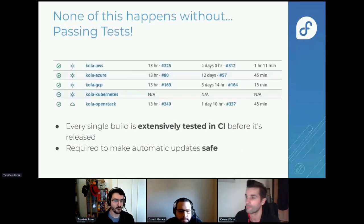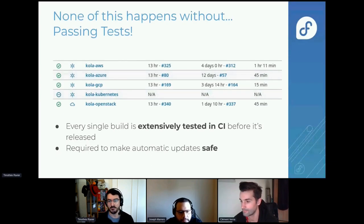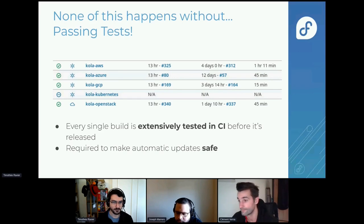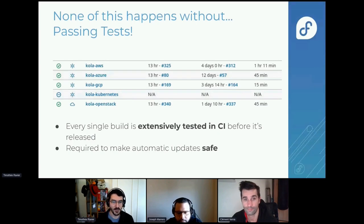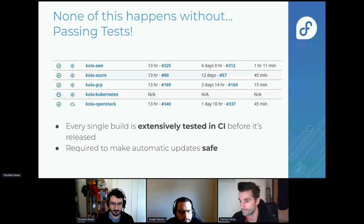All of that only happens because we have a huge number of tests. Before any single release of Fedora CoreOS goes out, we run a huge battery of tests across all major clouds and QEMU, making sure everything runs smoothly before we push any release out for everybody to consume via auto-update. We test extensively — it's kind of like doing a test for a new Fedora release, but every time we do a Fedora CoreOS release, because we want automatic updates to be safe.